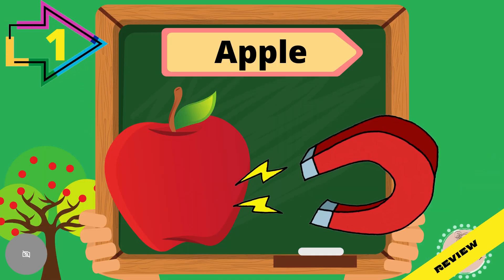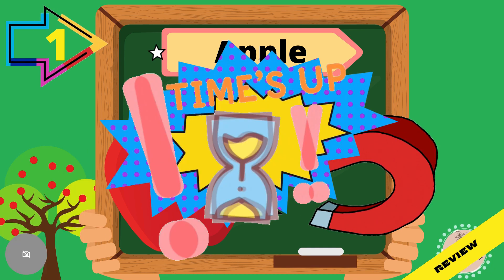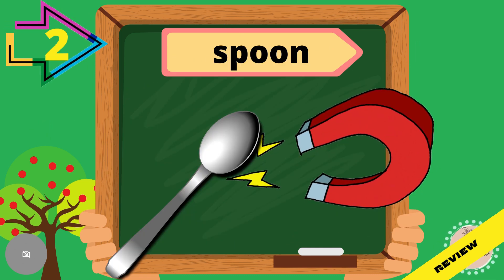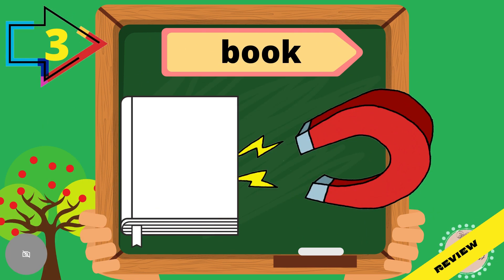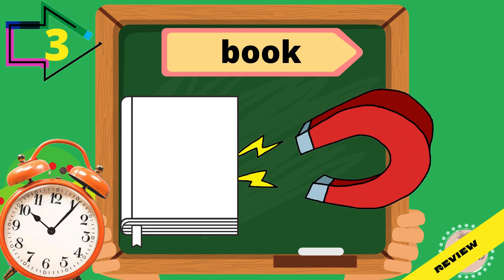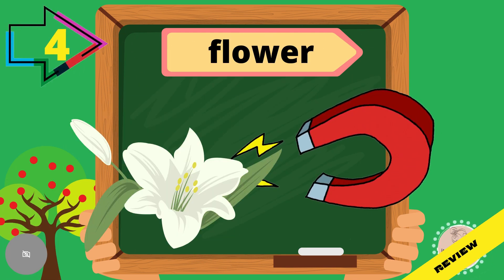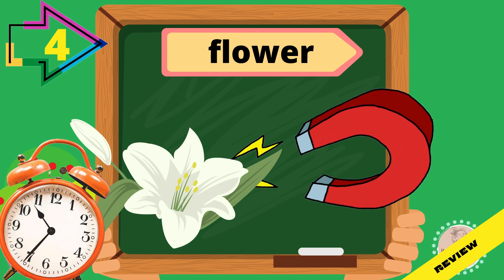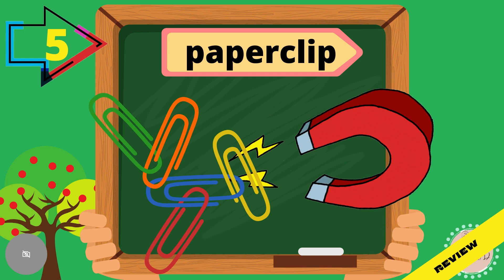Number 1: Apple. Number 2: Spoon. Number 3: Book. Number 4: Flower. Number 5: Paperclip.